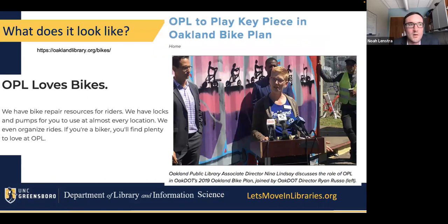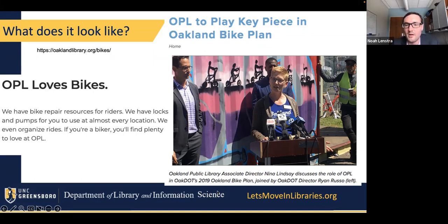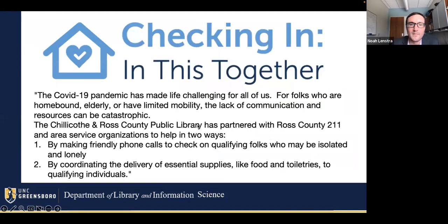Another example: Oakland, California. Oakland Public Library is a key piece in Oakland's bike plan, and here we have Associate Director Nina Lindsay discussing the role of Oakland Public Library in the Oakland Department of Transportation's 2019 bike plan. During COVID-19, we saw lots of libraries team up with others — for example, in Ohio, the Chillicothe and Ross County Library partnered with Ross County 211 and area service organizations to help by making friendly phone calls to check in on qualifying folks and coordinating the delivery of essential supplies.